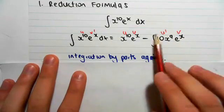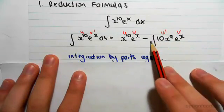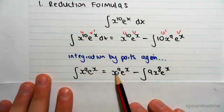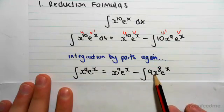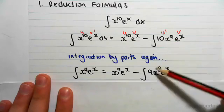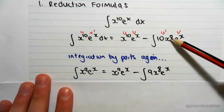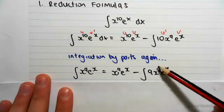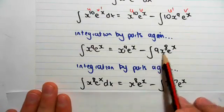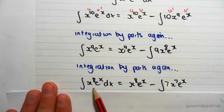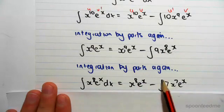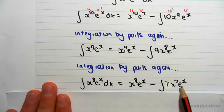Taking the 10 out as a constant, we integrate x to the power of 9 times e to the x by parts, getting x to the power of 9 times e to the x minus the integral of 9x to the power of 8 times e to the x. Each time we apply integration by parts we drop a power — from x to the 9, now x to the 8. Taking out the 9, we get x to the power of 8 times e to the x minus the integral of 7x to the 7 times e to the x.